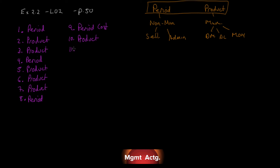Number eleven: depreciation on chairs and tables in the factory lunchroom — another tricky one. It's in the factory, but it's the lunchroom, which has nothing to do with making the product directly. However, we wouldn't call it direct material or direct labor, but we would call it manufacturing overhead. It's in the factory — the workers have to have lunch somewhere, you have to provide them with facilities, which means it's part of the cost of making that product. Product cost.